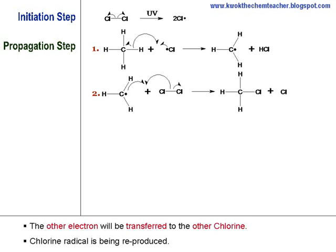Whereas the other electron from the chlorine-chlorine bond will be transferred to the other chlorine atom so that the radical can be reproduced.